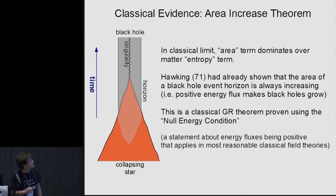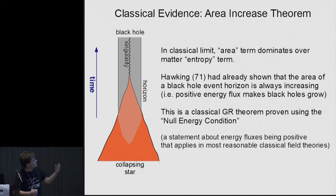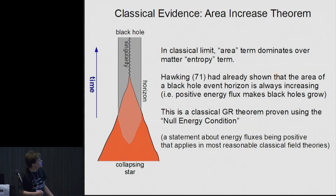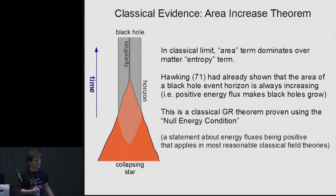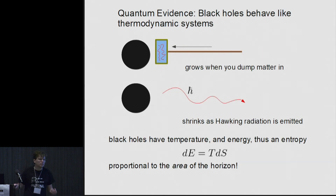One piece of evidence for this is that in classical general relativity, there's a theorem proven by Stephen Hawking. In this classical regime, the area term is the dominant one, and he proved that the area of a black hole event horizon is always increasing with time. He proved this before he proposed black hole thermodynamics, so he didn't know the true significance of it — the paper title was something like "a bound on the gravitational radiation emitted by black holes." If you assume that energies are positive, which is reasonable classically, the area of the horizon is increasing with time.